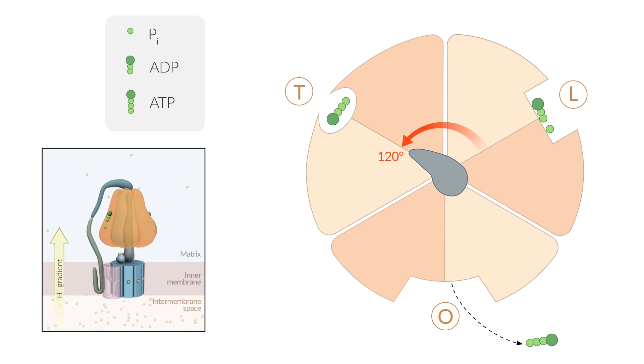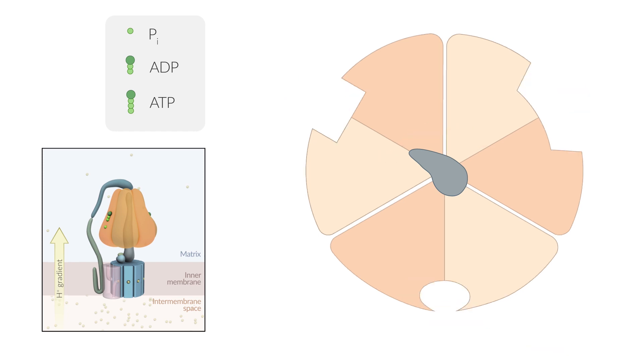Each 120-degree rotation leads to a conformational change of all three binding sites of the F1 subunit. Let's observe the changes of the binding site in the upper left of this image.